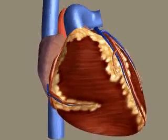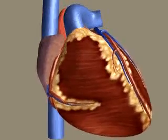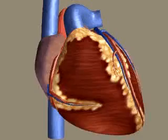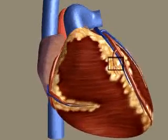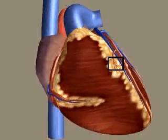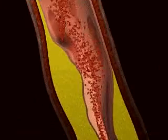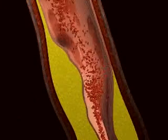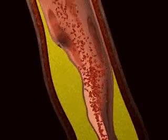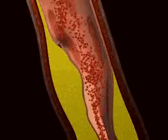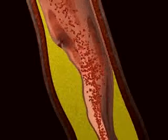Because the heart must continually beat, the coronary arteries serve a critical role, supplying the constantly active heart muscle with oxygenated blood. As we zoom in to observe the interior of this diseased coronary artery, notice the partially restricted blood flow due to the atherosclerotic plaque in the arterial wall.